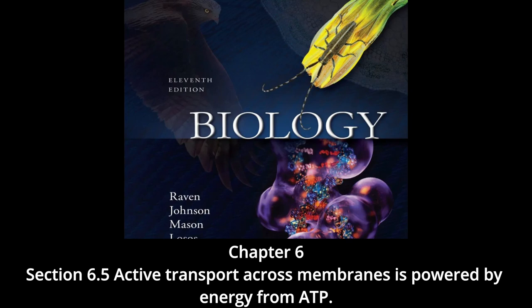Coupled transport: many molecules are transported into cells up a concentration gradient through ATP-indirect active transport — they move hand-in-hand with sodium ions or protons moving down their concentration gradients, a process called co-transport with two components. (1) Establishing the down gradient: ATP is used to establish a sodium ion or proton down gradient greater than the up gradient of the molecule to be transported. (2) Traversing the up gradient: co-transport proteins carry the molecule together with either a sodium ion or a proton across the membrane; because the Na⁺ or proton down gradient is greater, net movement is directed into the cell.